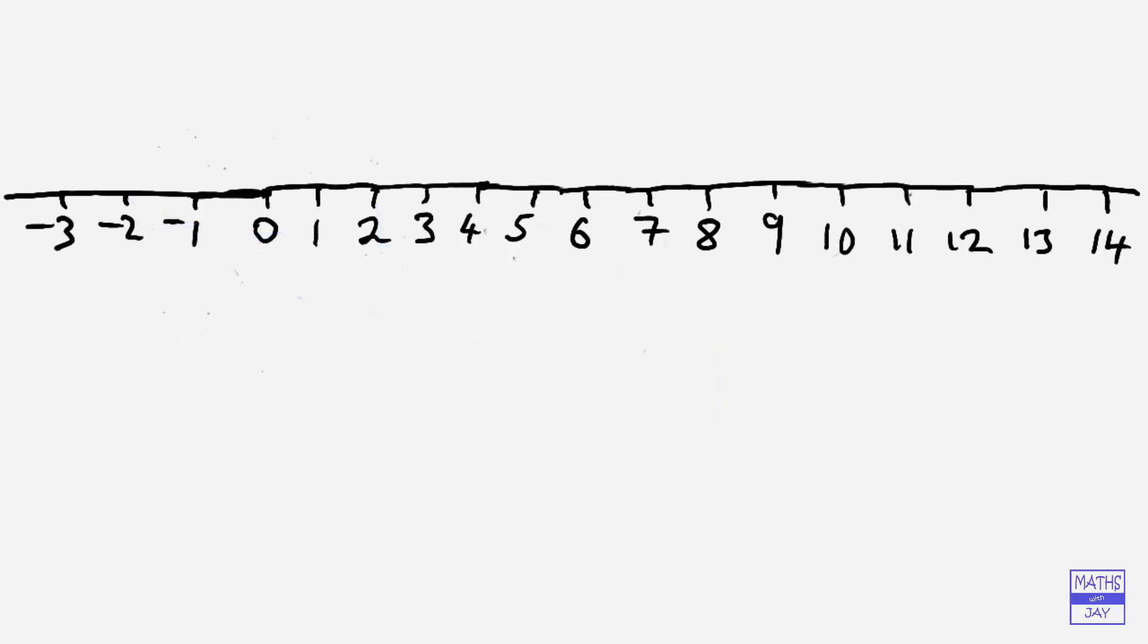What we're going to look at here is just restricting ourselves to a small part of the number line. So we're going to start from 0 and go up to 11 and get rid of the rest of the number line.